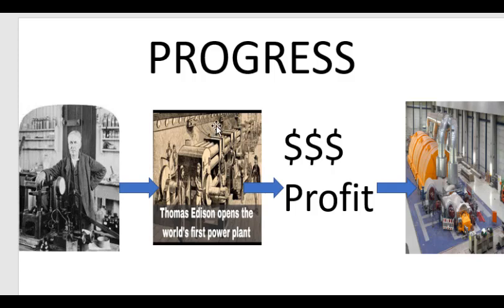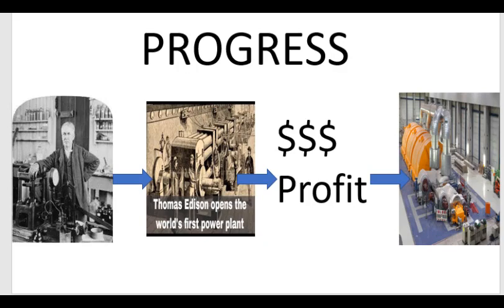So how did that transformation — from accepting things as they are to believing we could change things through research — occur? Humans have been curious about how the universe works since the cognitive revolution. We've looked up in the sky and wondered how things work, and why the stars are in the sky. That just seems to be part of human nature, and we've put a great deal of time into figuring it out. Think of the Greeks, or the Buddhists, who explored all kinds of ideas about how the universe worked. So what then is different about the scientific revolution? And it begins with the idea of ignorance.